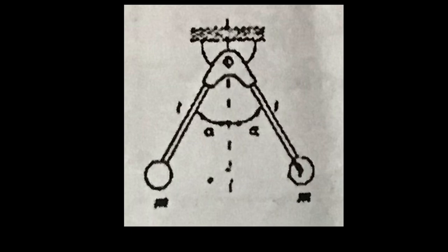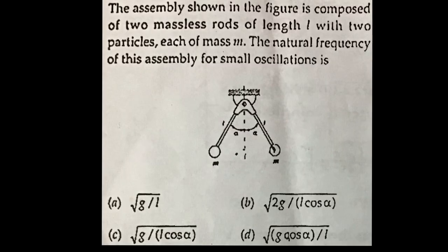Okay, so this is the system as I have shown here. We have two massless rods as shown over here. They are of length little l. They are massless so their mass moment of inertia is not there to be considered.